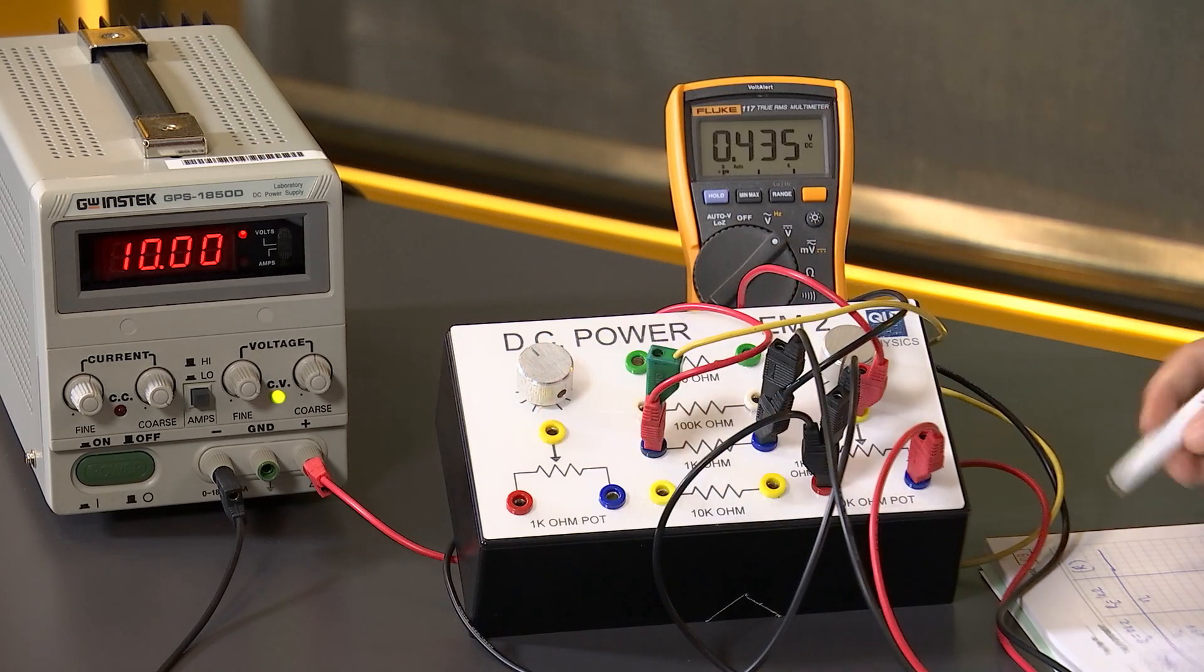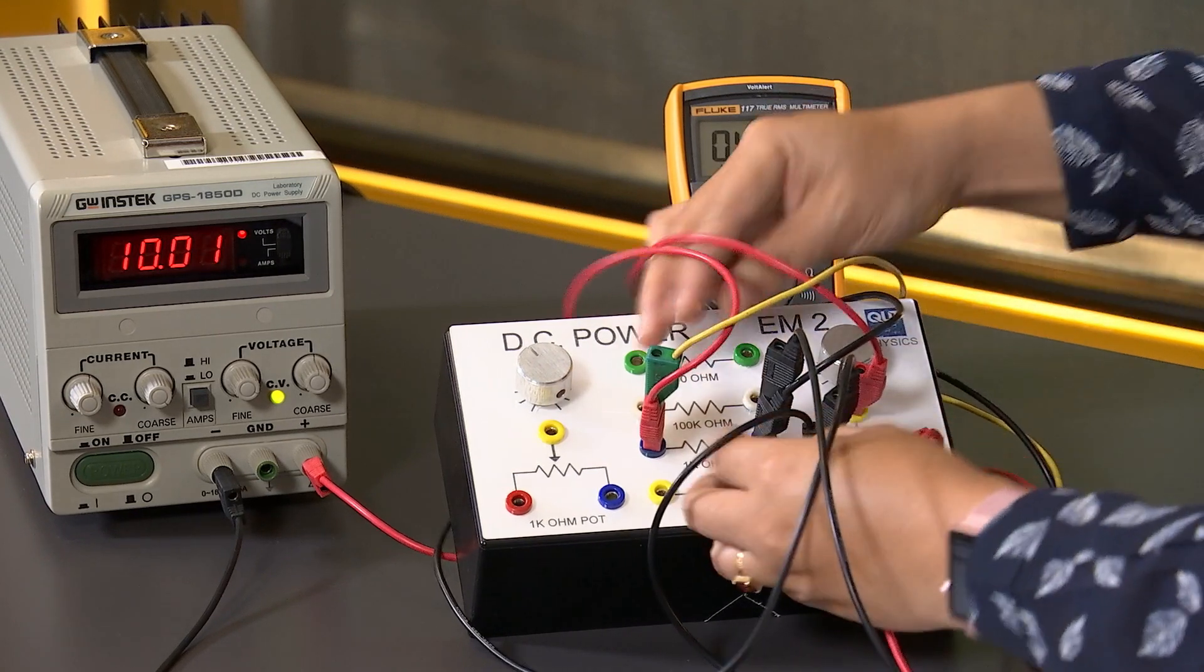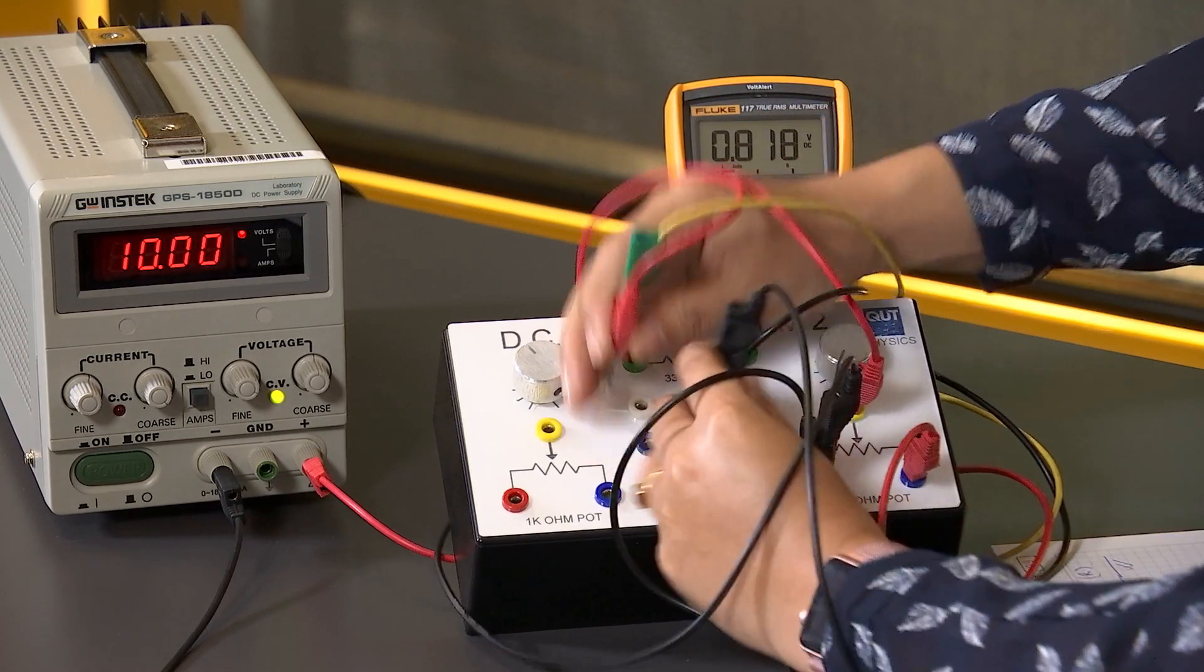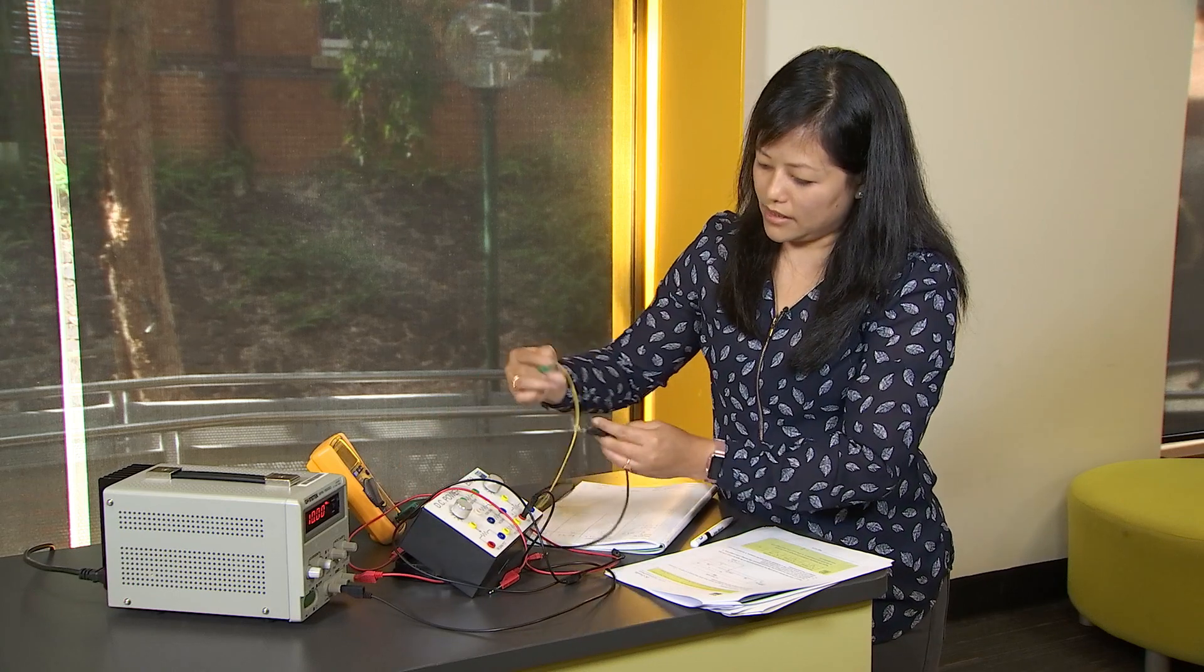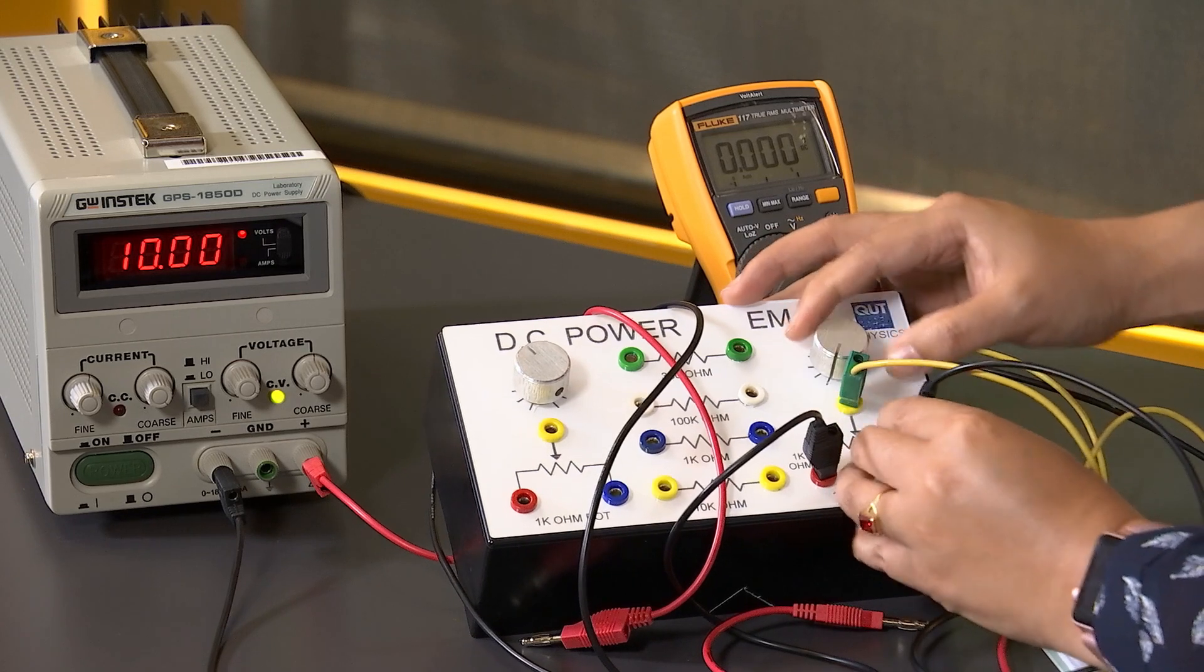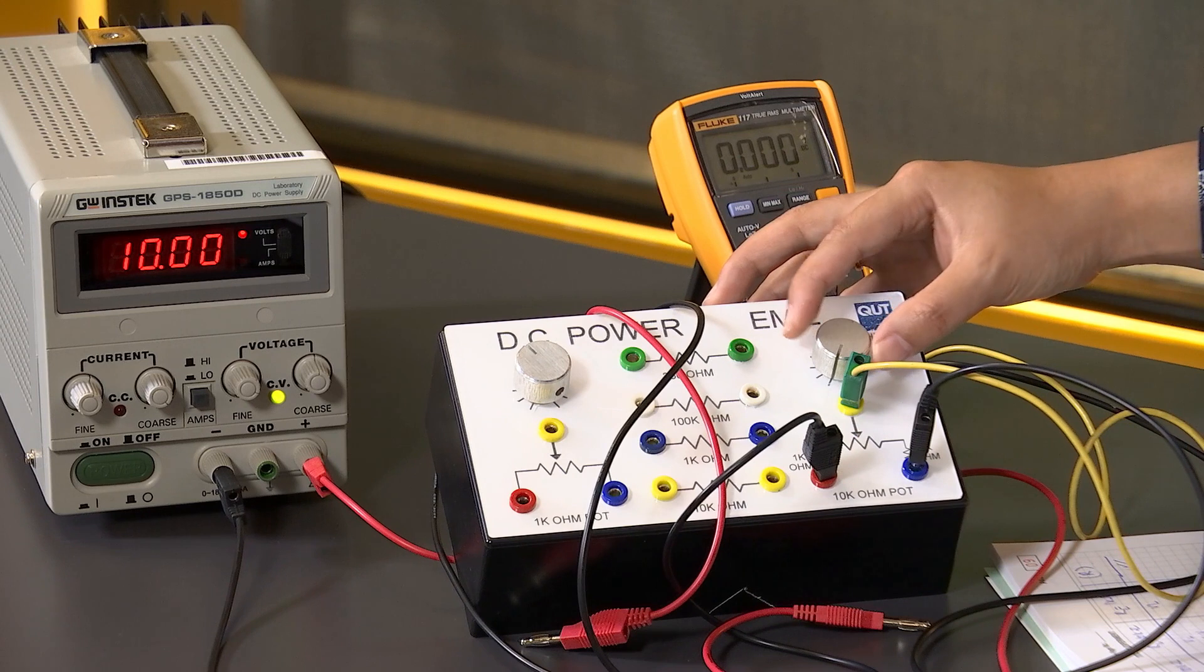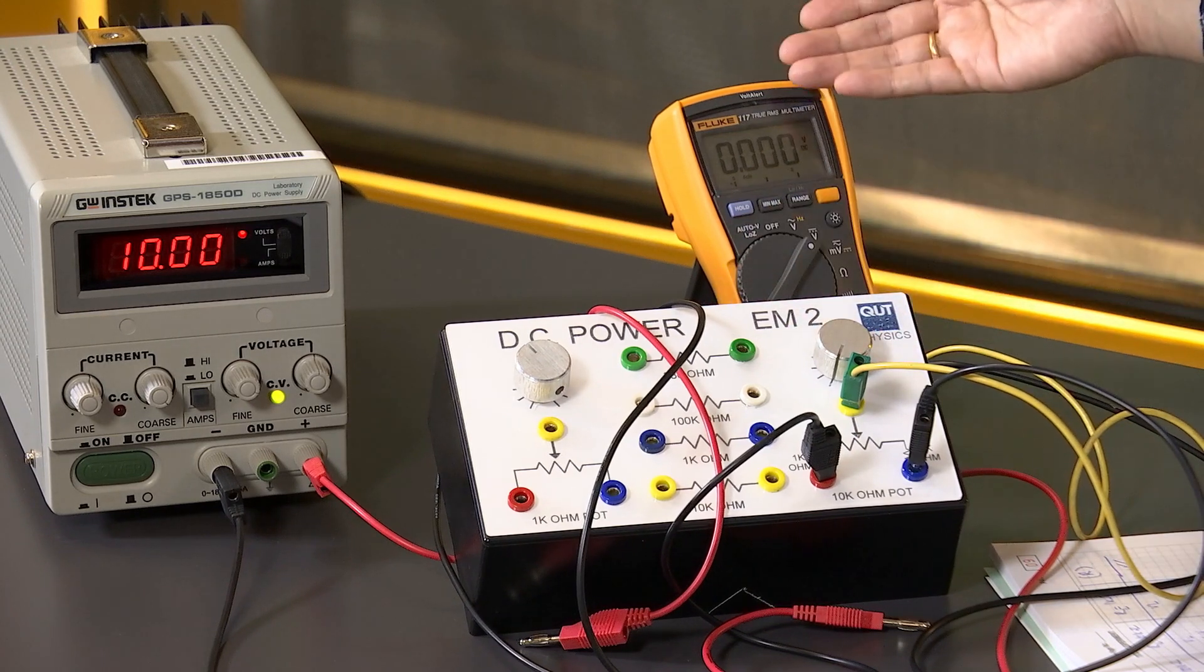And at the end, to get the fourth column, we remove our connections. Then we are going to measure the total resistance across this potentiometer by keeping this knob at almost the same positions that we did for measuring the voltage.